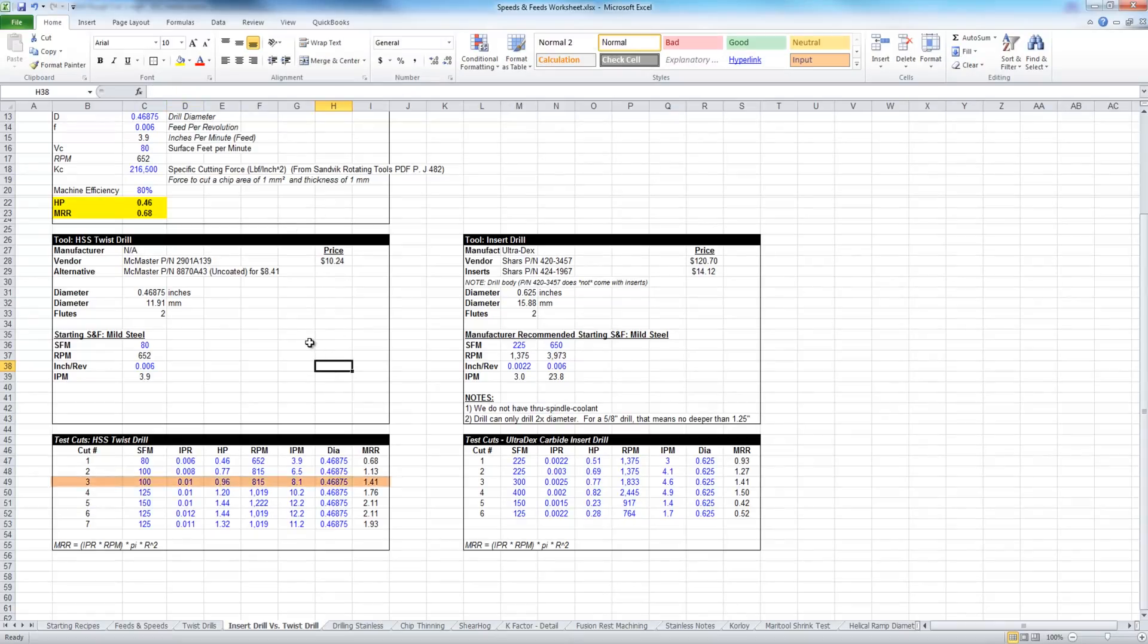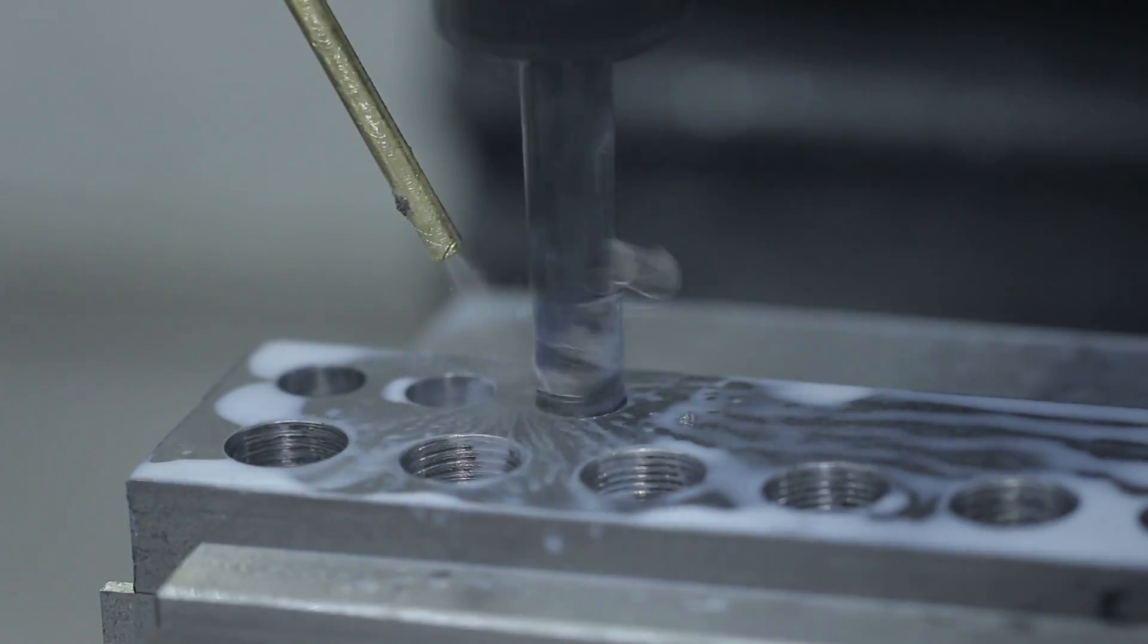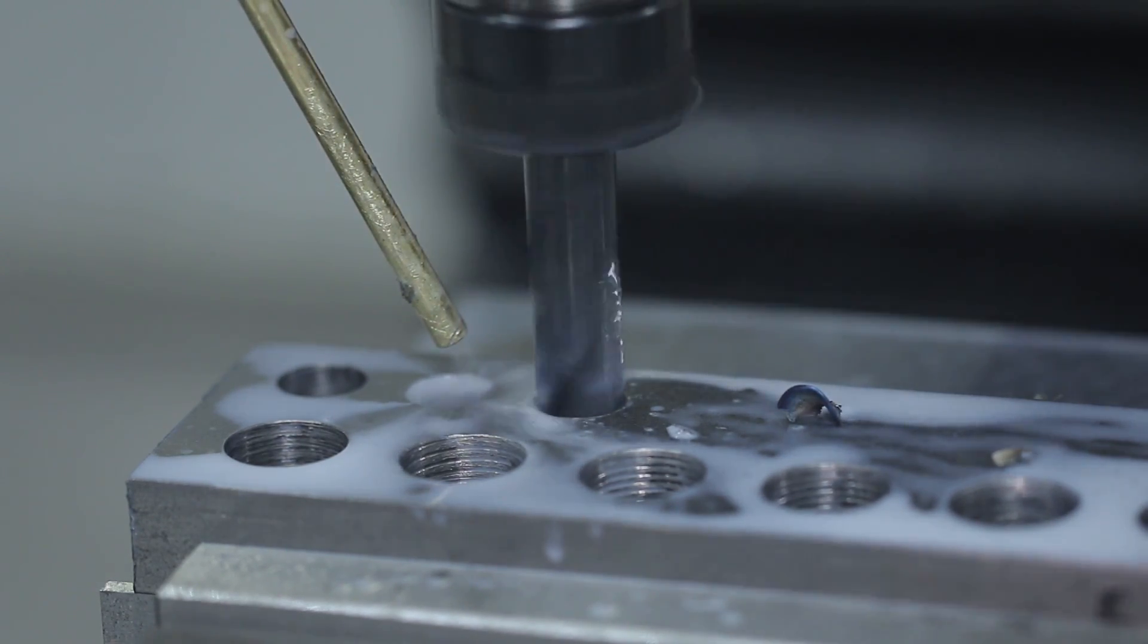Cut number three, we're bumping up the inch per revolution from 8 thousandths of an inch to 10 thousandths of an inch or about 0.25 millimeters. Increase in horsepower to 0.96 and 1.41 cubic inches of material removal. Again, silent. Notice I'm not even spotting these holes. Good chip evacuation, no chatter, no noise. I like it.